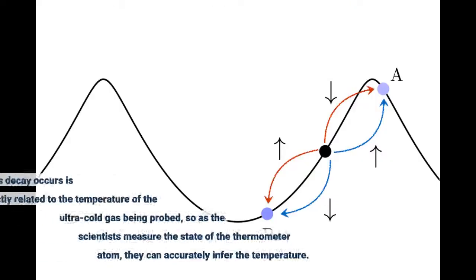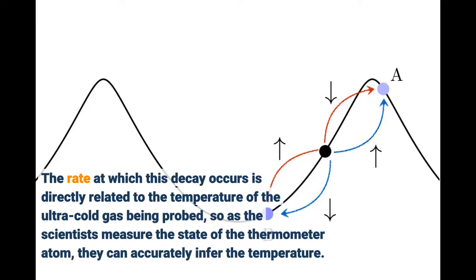The rate at which this decay occurs is directly related to the temperature of the ultra-cold gas being probed, so as the scientists measure the state of the thermometer atom, they can accurately infer the temperature.